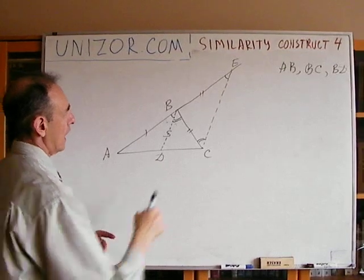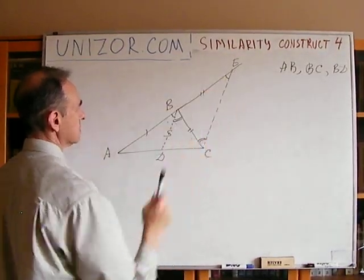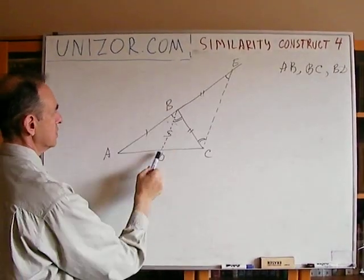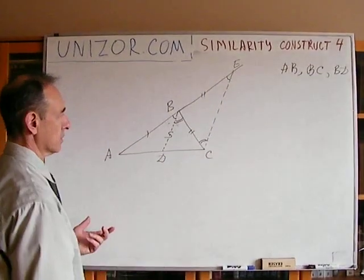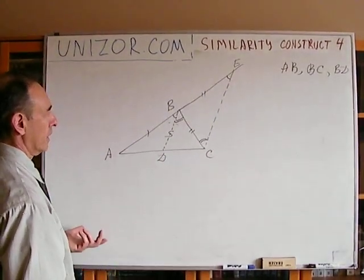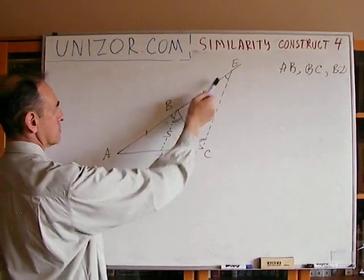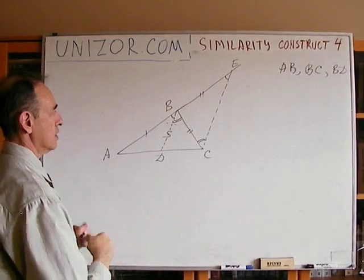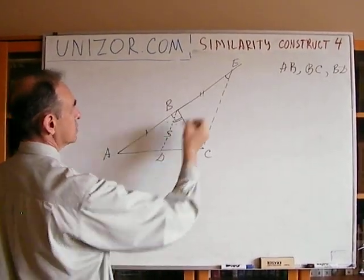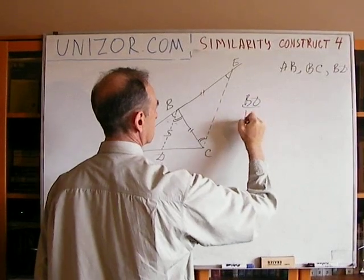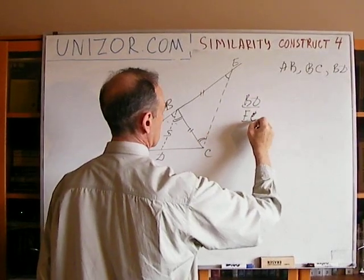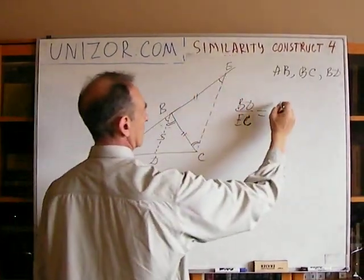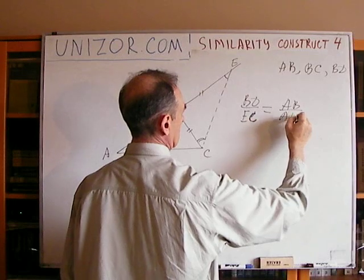Now I would like to establish the length of EC. Obviously, triangles ABG and AEC are similar — one common angle, and these two angles are also the same. So we have similarity, and from the similarity we can write the proportionality: BG over EC equals AB over AE.